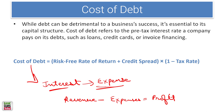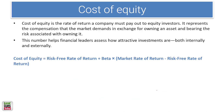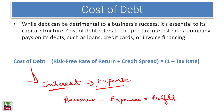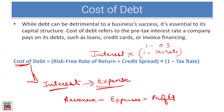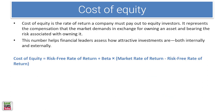You get a tax benefit on interest expense. The formula for cost of debt is: risk-free rate of return plus credit spread — also known as interest — multiplied by (1 minus tax rate). For example, if the interest rate is 10% and the tax rate is 30%, you multiply 10% by 0.7, giving an effective cost of debt of 7%.